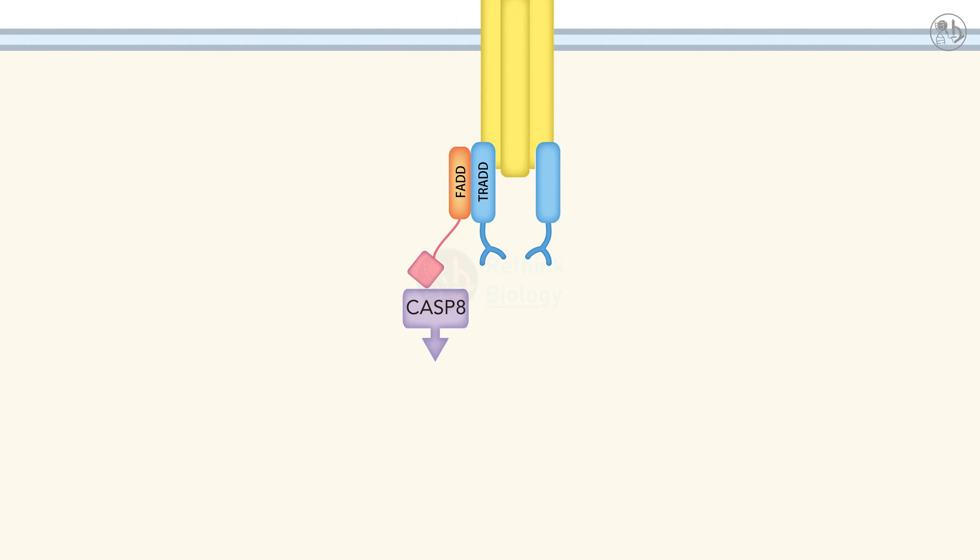Caspase-8 then cleaves and activates Caspase-3, another protease that executes cell death by cleaving various cellular proteins. This is called the extrinsic apoptosis pathway, as it is triggered by an external signal such as TNF-alpha.